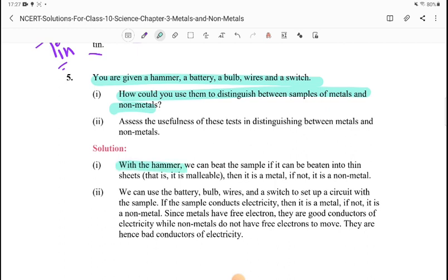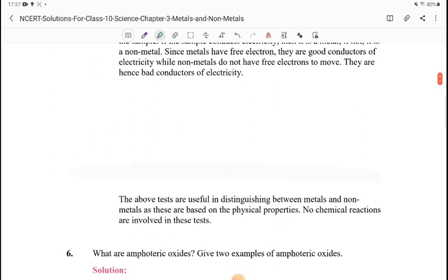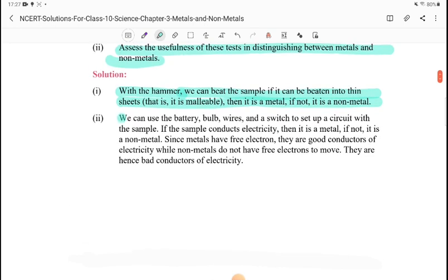Question 5: You are given a hammer, a battery, a bulb, wires and a switch. How would you use them to distinguish between samples of metals and non-metals? With the hammer, we can beat the sample. If it can be beaten into thin sheets, malleable, then it is a metal. If not, it is a non-metal.